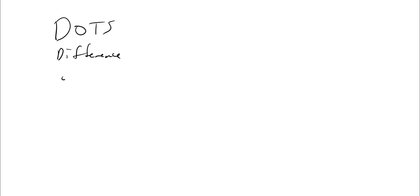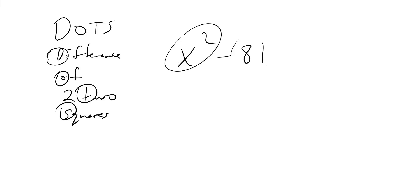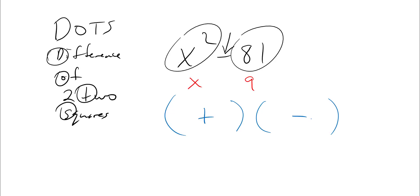We actually abbreviate difference of two squares as DOTS. So if I give you x squared minus 81: are they perfect squares? Yes. Is there a subtraction sign between them? Yes. What's the square root of x squared? X. What's the square root of 81? Nine. Let's put our parentheses — plus and minus, always plus-minus. Now put the x and the 9 here and the x and the 9 here, and we're done with the problem.